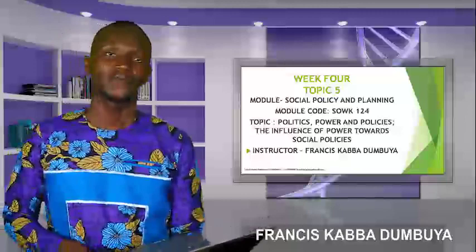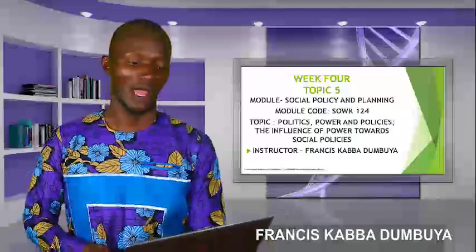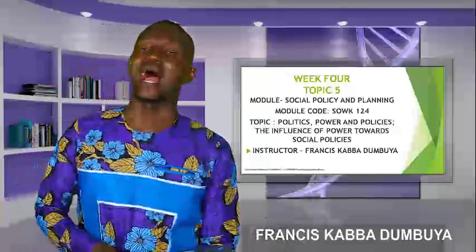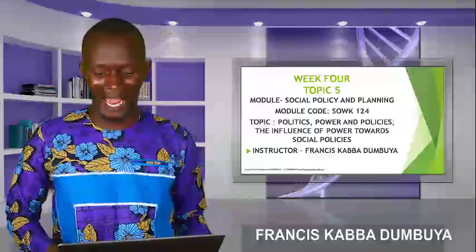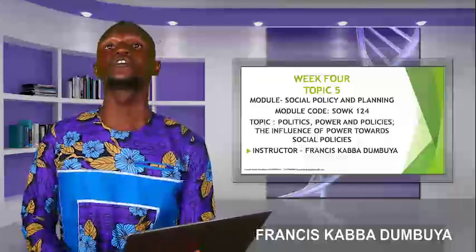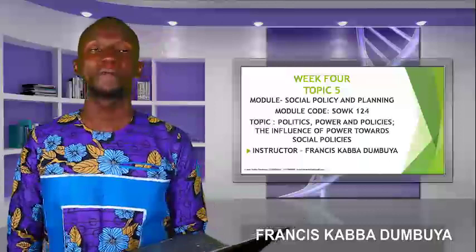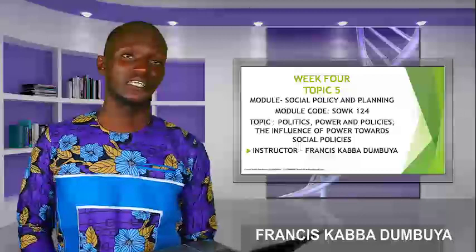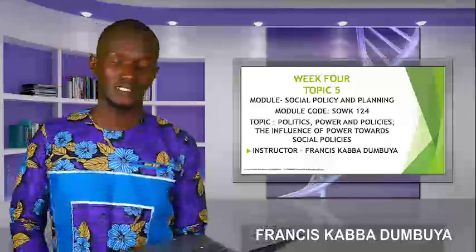There are different forms of power. One is political power, which is exercised by the government in steering the affairs of the state. It normally comes from the constitution. For example, an elected president possesses political power — when a president has been democratically elected by the people, that president possesses political power, with all the necessity to use the constitution to rule.